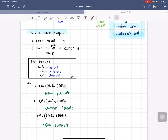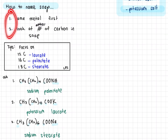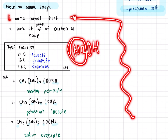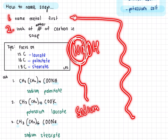How do you name your soap? There are only 2 steps. The first step is to name the metal first, whichever strong alkali you use. If you use sodium hydroxide, sodium is the metal. Then step 2: look at the number of carbons in the soap. If you have only 12 carbons, then it's laurate — so it will be sodium laurate.